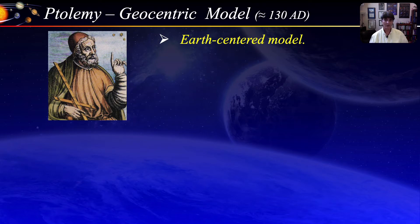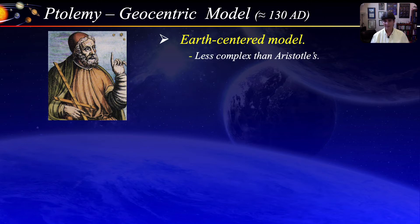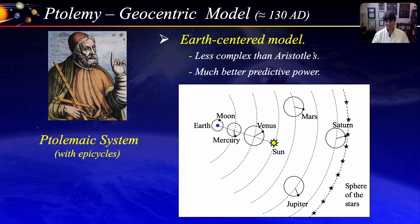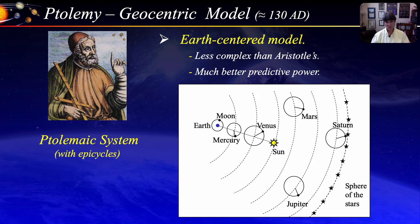About 400 years later, the great Greco-Roman astrologer, astronomer, and mathematician Ptolemy came along and produced a system that, although still Earth-centered, was much less complex than Aristotle's, and more importantly, it had much better predictive powers. In the Ptolemaic system, the Earth is at the center and all other known bodies move around the Earth. Each of the planets also moves along smaller circles called epicycles, which Ptolemy introduced to explain the apparent retrograde motion of planets. It was very accurate at predicting the position of planets as a function of time, and was used for almost 1500 years until Copernicus came along.